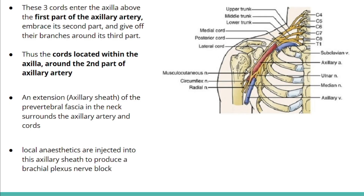The axillary sheath, which is the extension of the prevertebral fascia in the neck, surrounds the axillary artery and therefore surrounds the cords as well. If local anesthetics are administered into the axillary sheath, it produces a brachial plexus nerve block.